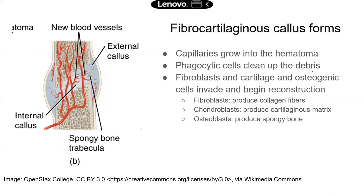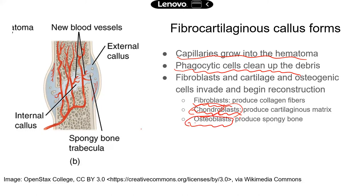The second step is where the repair really begins. Capillaries will grow into the hematoma, so new blood vessels will grow into the site of damage. Phagocytic cells will clean the debris — broken tissue there will be engulfed and broken down. Fibroblasts will produce collagen fibers, the same type of cells in skin that make collagen, and these fibers will connect the broken ends of the bone. Chondroblasts will produce cartilaginous matrix, and osteoblasts — bone-forming cells — will make spongy bone. This is where reconstruction really starts, with different kinds of cells doing their jobs.